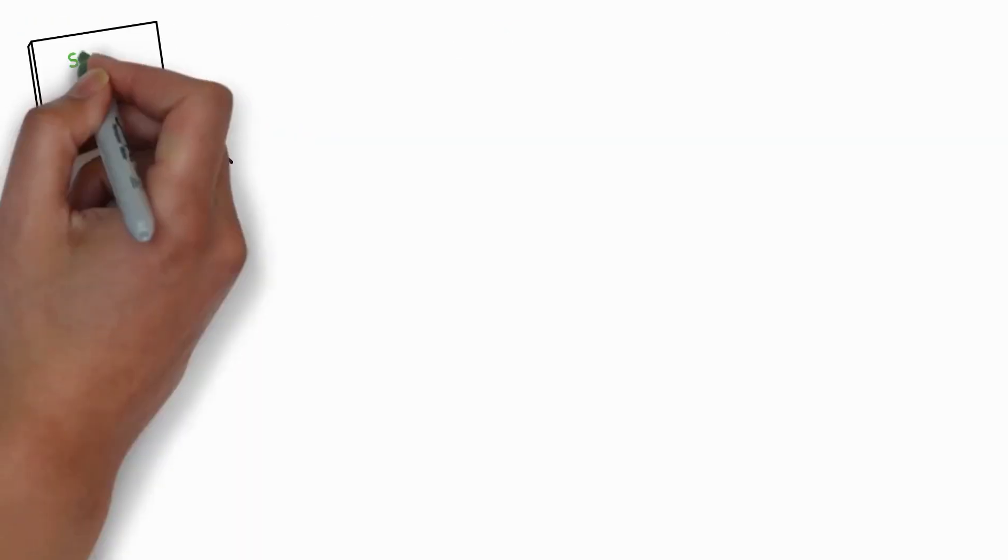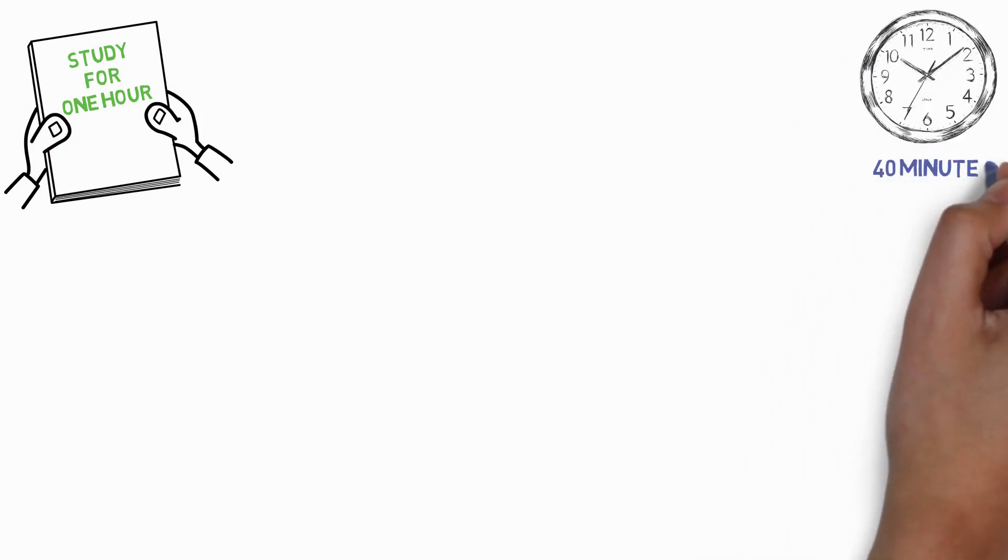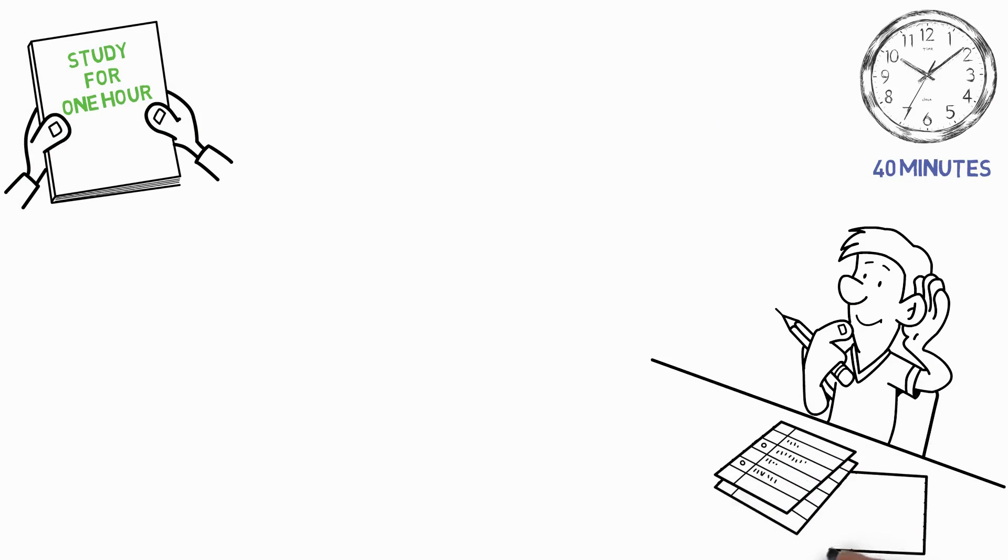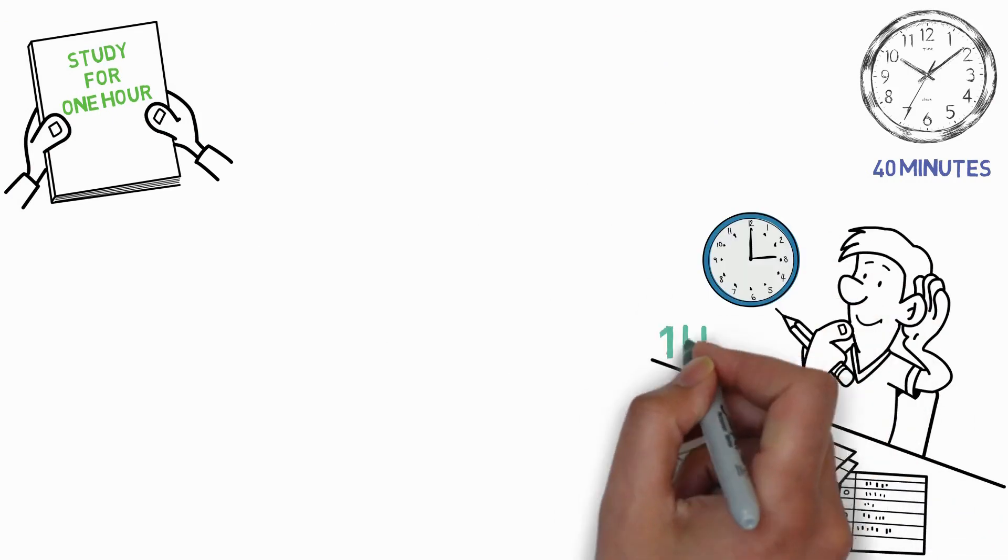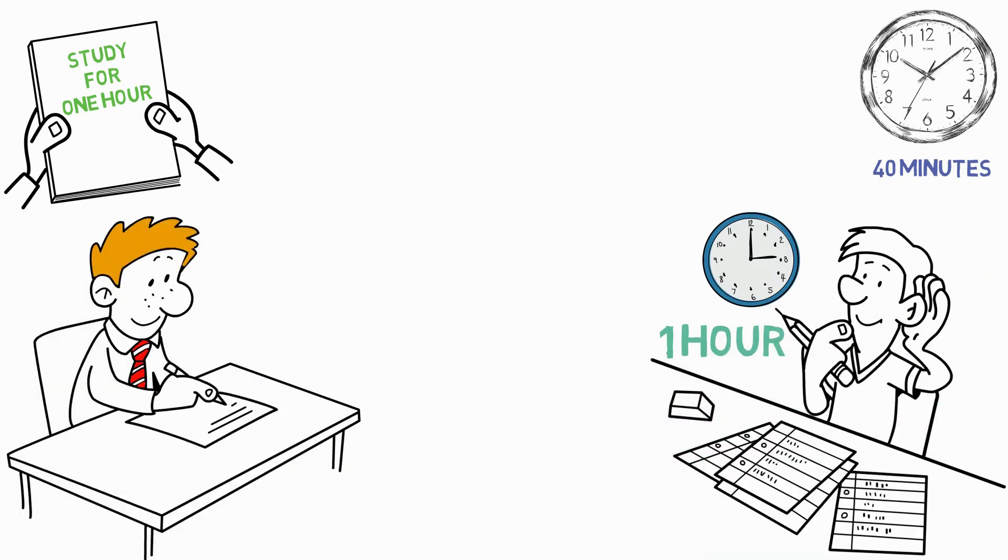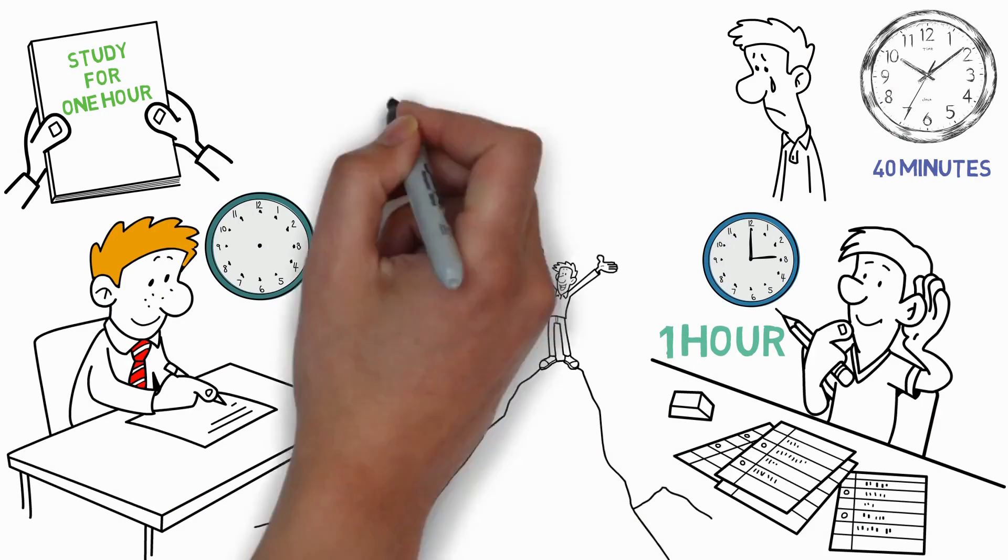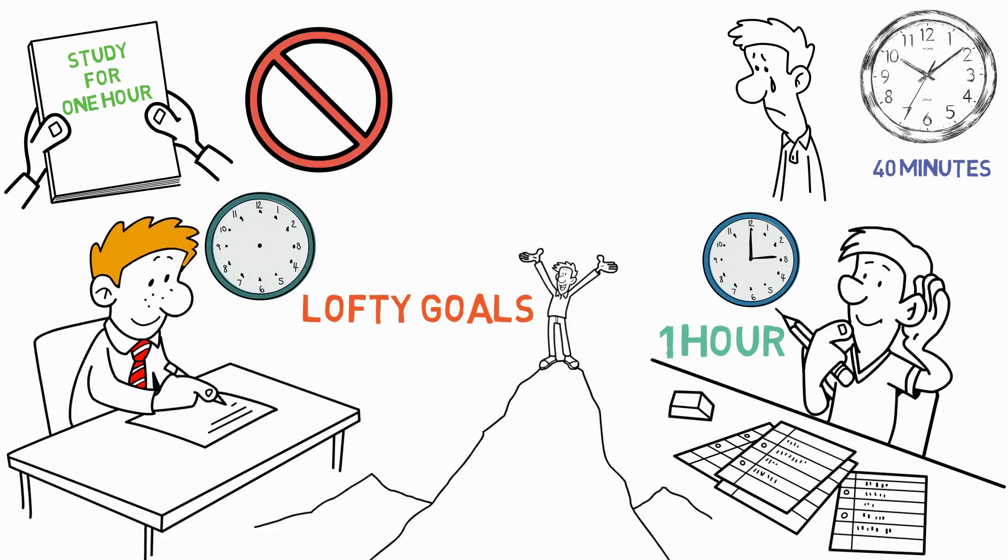You could plan to study for an hour, but what if you only have forty minutes to spare? Most people would not even attempt to begin since their objective is one hour. However, instead of gaining forty minutes of study, they settle for zero minutes. Their lofty goals are stopping them from achieving their objectives, and that's the wrong approach.